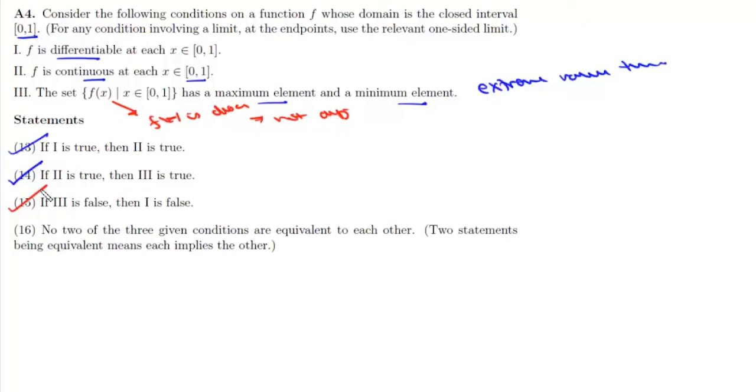Now 16 is: no two of the three given conditions are equivalent to each other. Basically if we look at first and second, then first implies second but second doesn't imply one. In the same way second implies third but third doesn't imply second, and first implies third but third doesn't imply first.